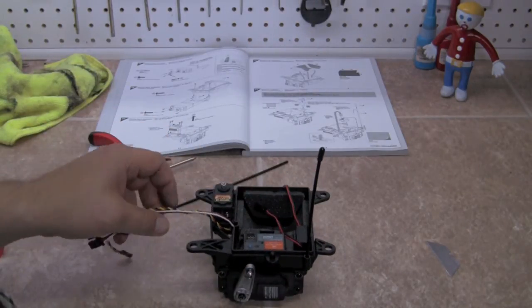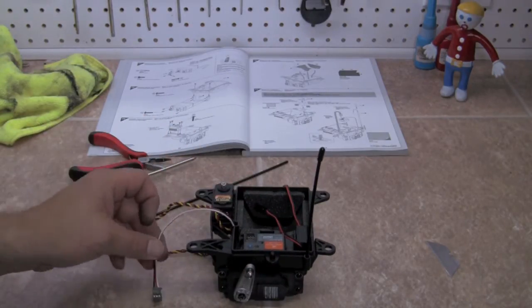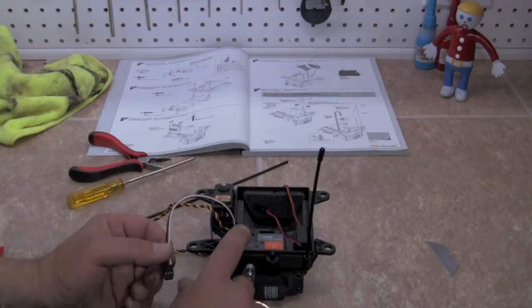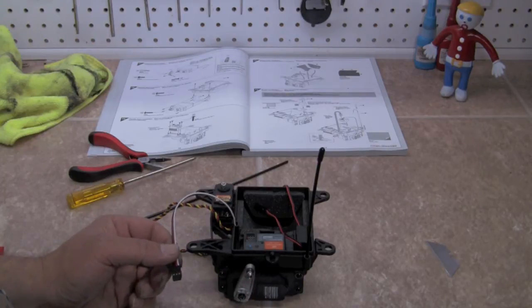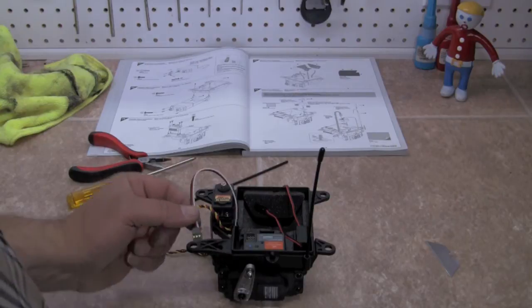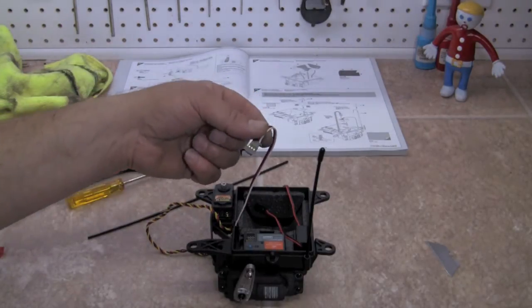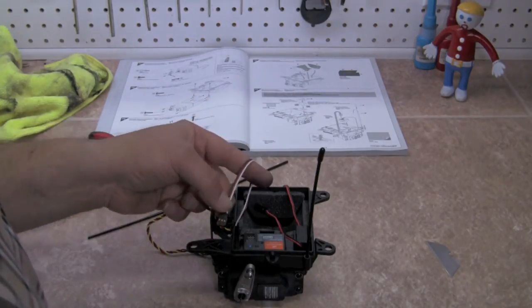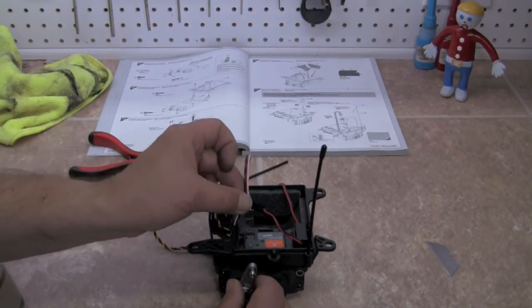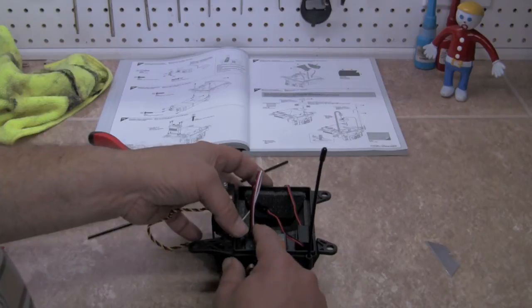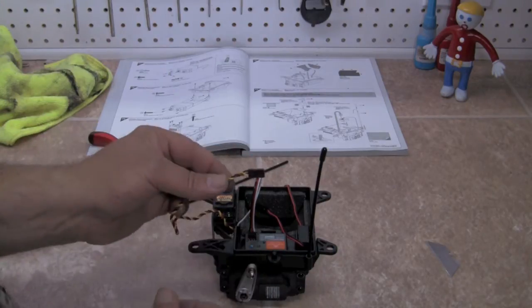Now comes the fun part. You're going to plug in your servos. You're going to want to check again with your radio manufacturer to see how and where your different plugs go in. We're not going to go over radios because there's just too many. However, this particular lead right here is for our servo, so we're going to plug it into our steering, and this one is for our throttle.